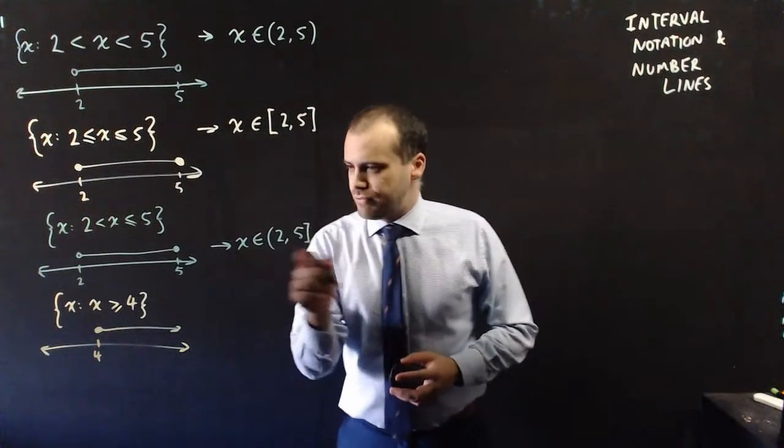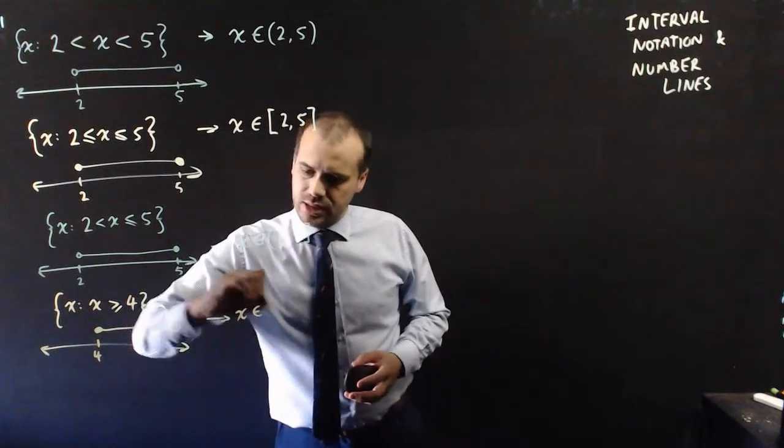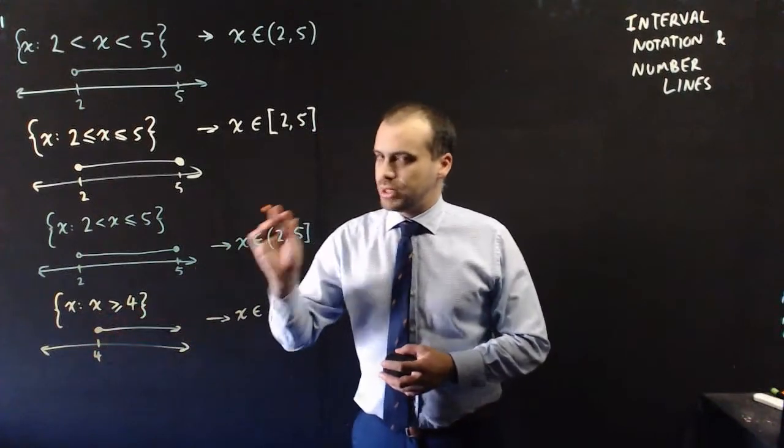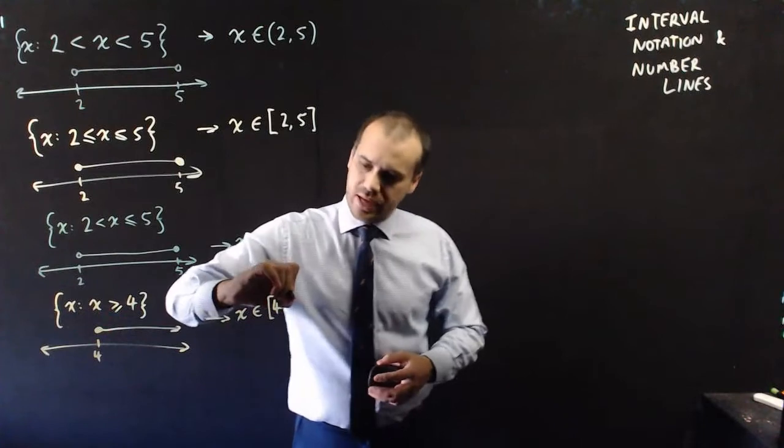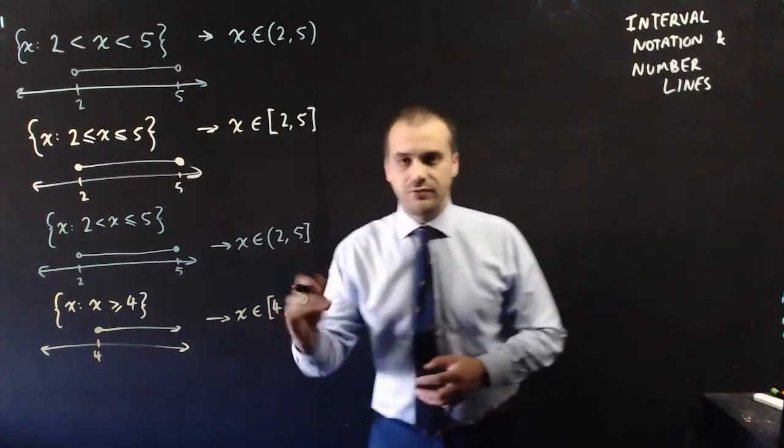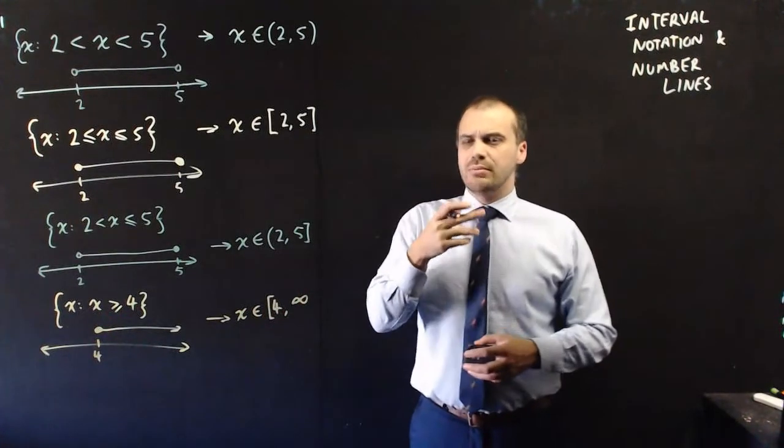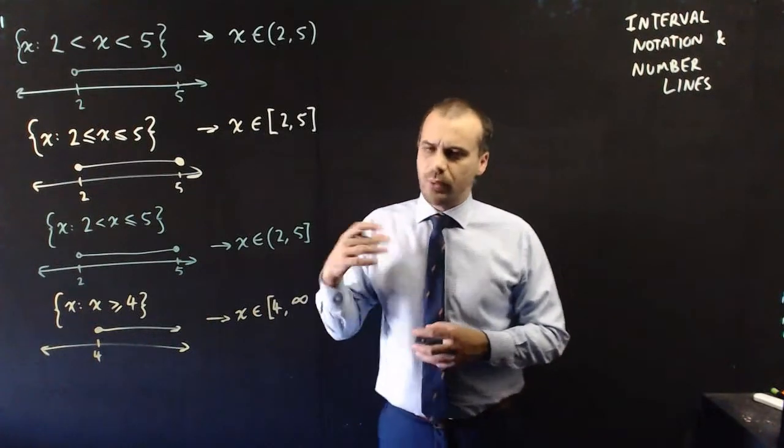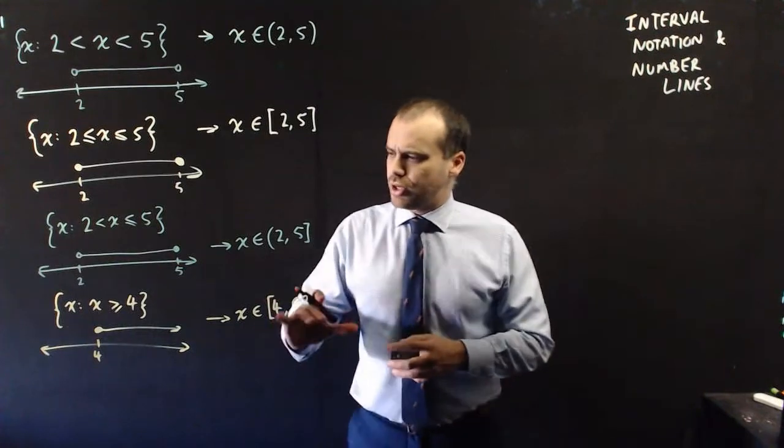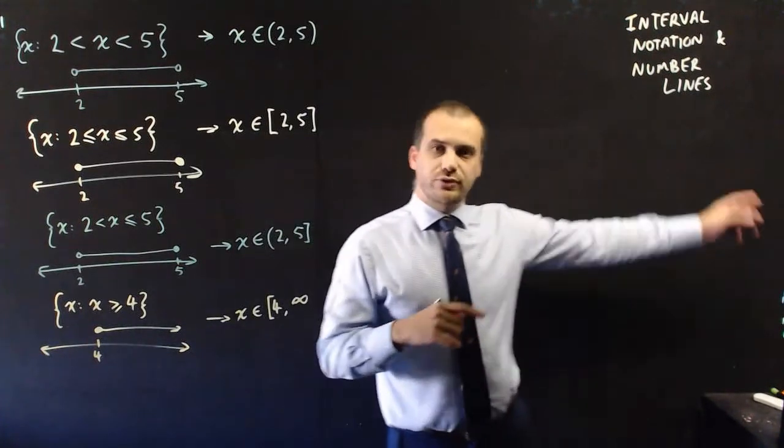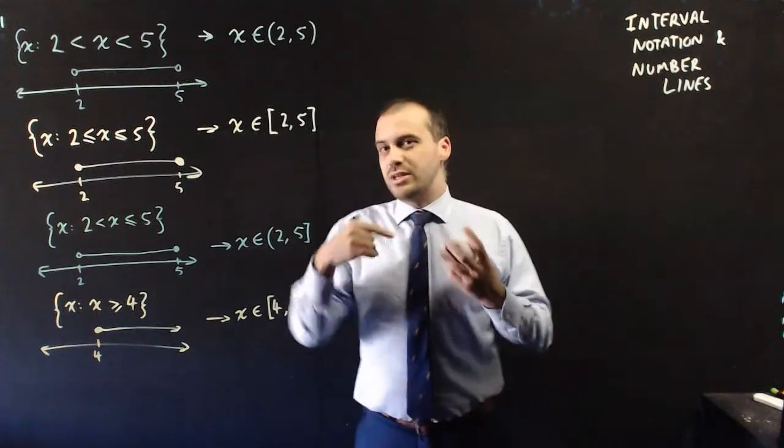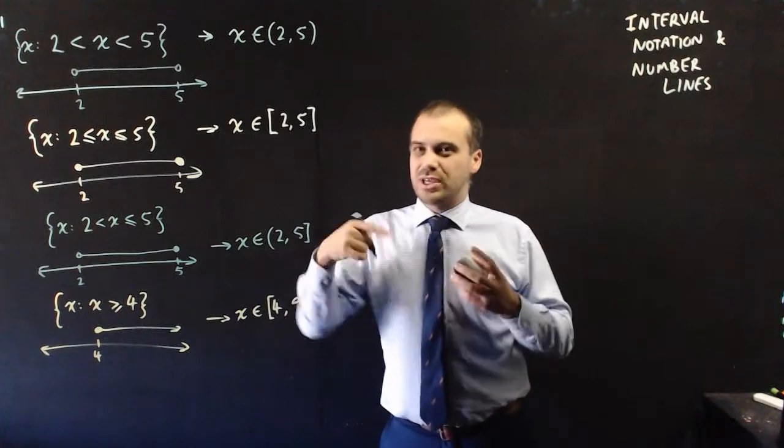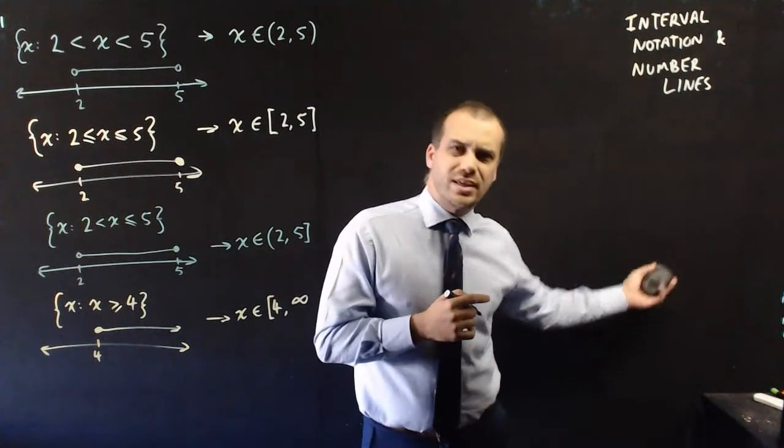So in terms of this one here, we say that x is in the set. So we need 4, but we need to include 4. And then it heads off to infinity. But should I use a square bracket or should I use a curved bracket? Well, when I first saw this, I thought I should use a square bracket because I'm going off to infinity. But you can never reach infinity. So you can't use a square bracket because you can't include infinity because you can never get to infinity.